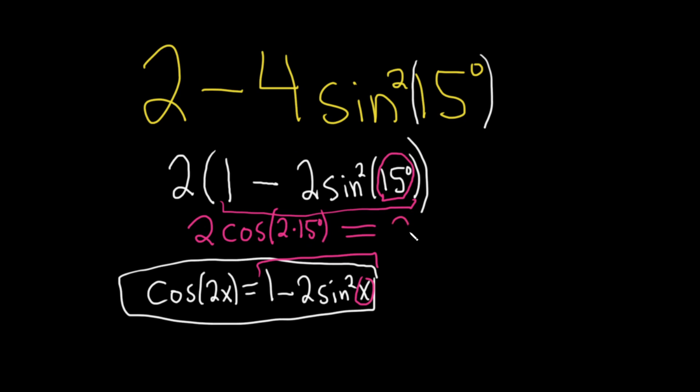So this equals 2, I'm going to write it again. 2 times 15 is 30, so we have 2 times cosine of 30 degrees. The cosine of 30 degrees is the square root of 3 over 2, so this is 2 times square root of 3 over 2. The 2s cancel, and you get the square root of 3.